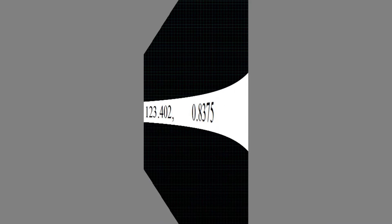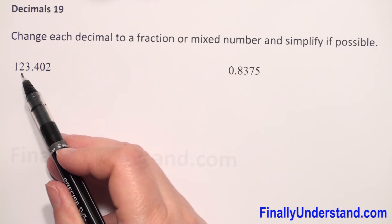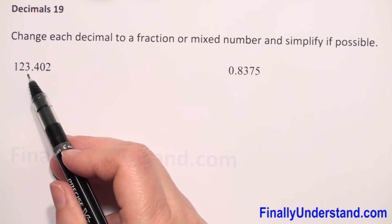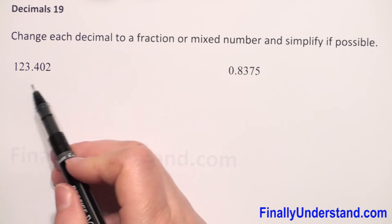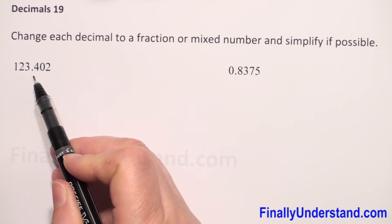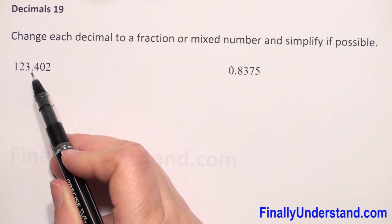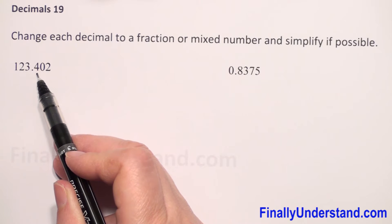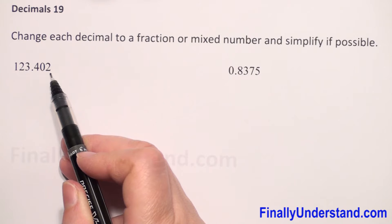We have given decimal numbers and we have to change them to a fraction or mixed numbers. The first example we have is 123.402. First we have to just read our decimal number: we have 123, and after the decimal point we read 402 thousandths.